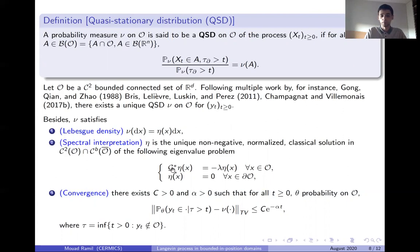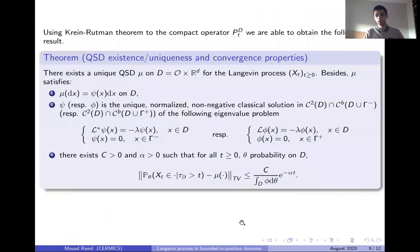The first one is that it admits a density with respect to the Lebesgue measure on the domain O, and that this density is the unique solution of an eigenvalue problem. Here you take the adjoint of the infinitesimal generator of the process Yt, and you can prove a convergence result in total variation.